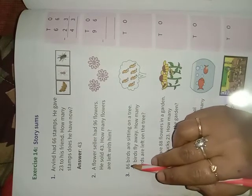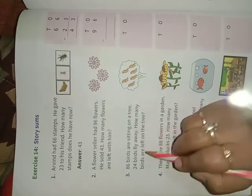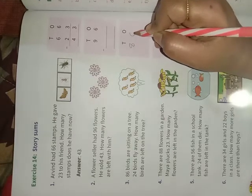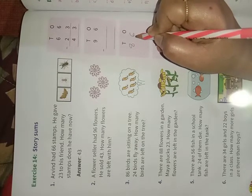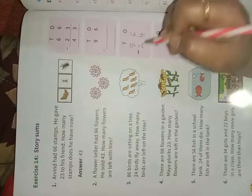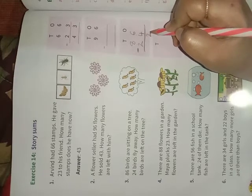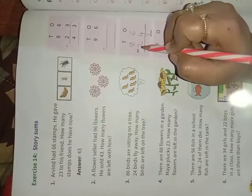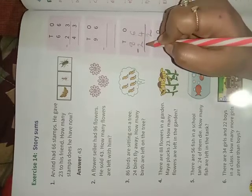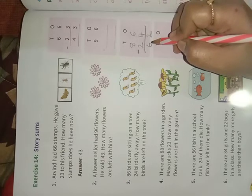Problem number 3: 86 birds are sitting on a tree, 24 birds flew away children. So keep a minus sign here and draw the line. Now 6 minus 4, count it backward, you will get the value very soon, that is 2. 8 minus 2: 8, 7, and 6, so the value is 6. So when there were 86 birds and 24 flew away, what is the value left children? 62. Understood children?